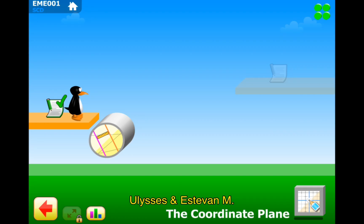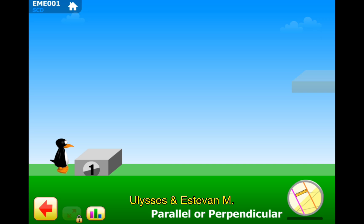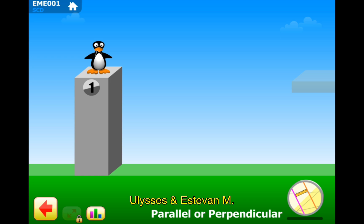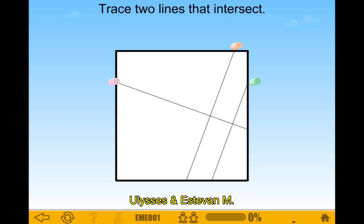Let's do puzzle 1: Parallel or Perpendicular? Level 1. Parallel or Perpendicular? Trace two lines that intersect. Intersect means like when they touch.